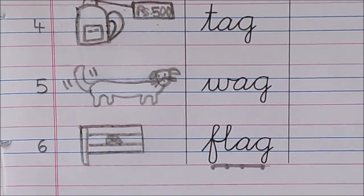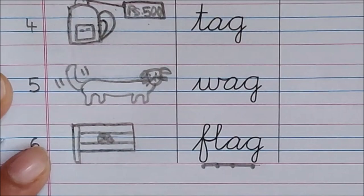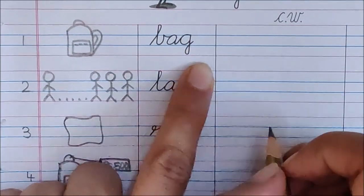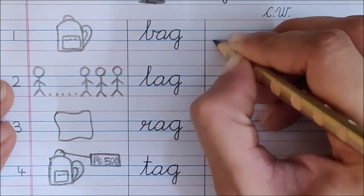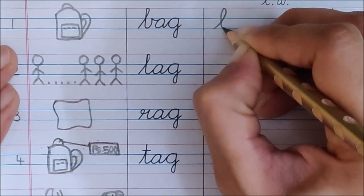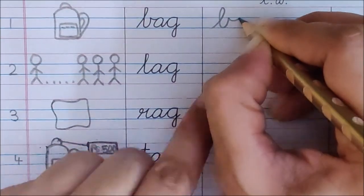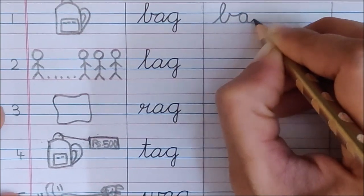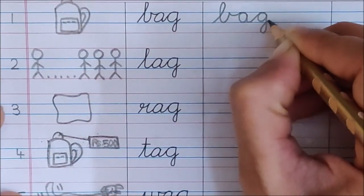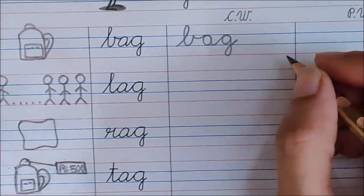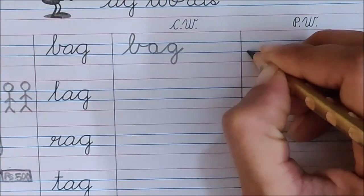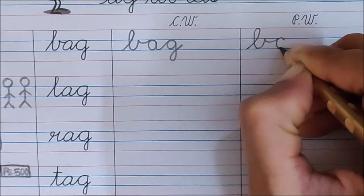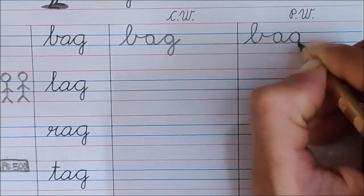Now, children, it's time to do writing of all these words. Let us start with the first word. Read with me. B. A. G. Bag. So, your children, write down beautifully. B. See, the smiley has not touched the lower blue line. Now, turn the smiley. A. G. Bag. I hope you are saying and writing. We have to write one more time. B. Smiley up. A. G. Bag.